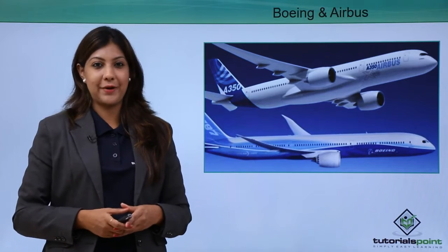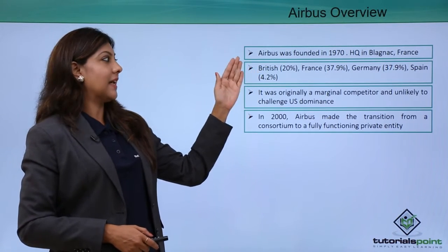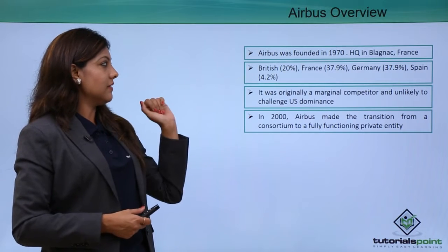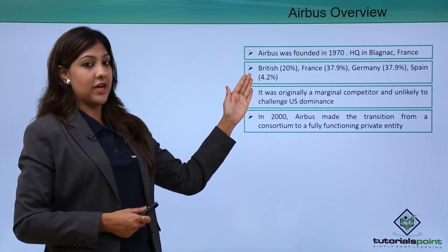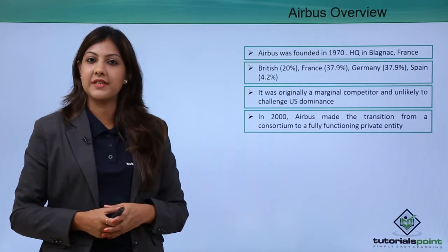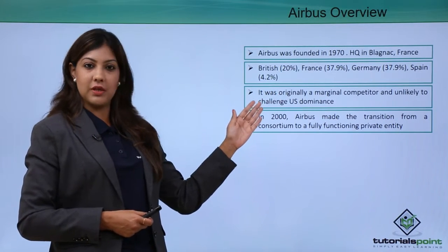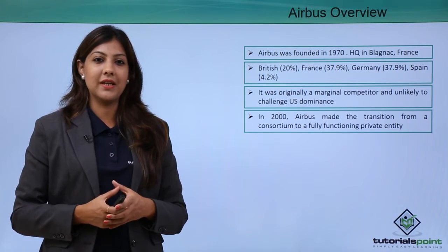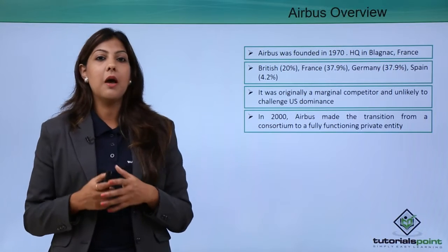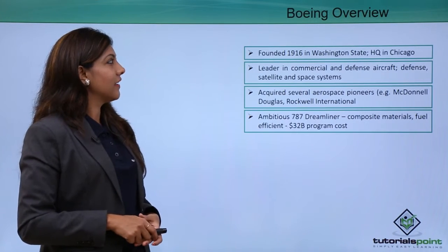There are two main aircraft manufacturers: Boeing and Airbus. Airbus was founded in 1970 and is headquartered in France. The British hold about 20% of Airbus, France and Germany each hold 37.9%, and Spain holds 4.2%. Airbus was originally a marginal competitor unlikely to challenge US dominance. In 2000 it made the transition from a consortium to a fully functional private entity.